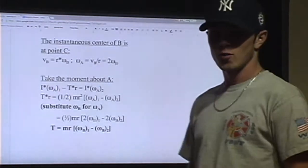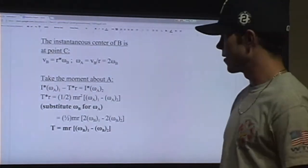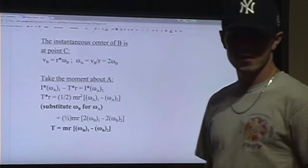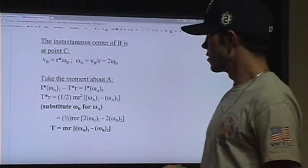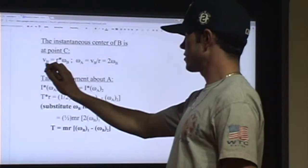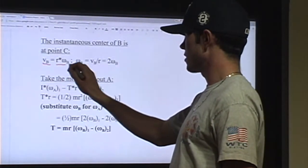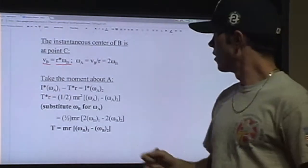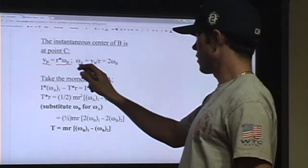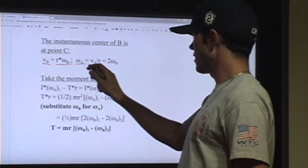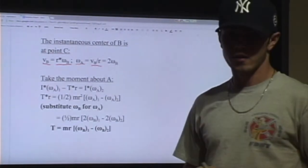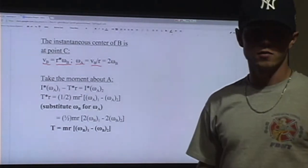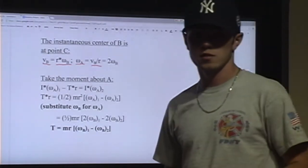After drawing our free body diagrams, we can see that the instantaneous center of B is at point C. So the velocity of B is equal to the radius times the angular velocity of B. Also, the angular velocity of A is equal to the velocity of B divided by the radius, or just two times the angular velocity of B.